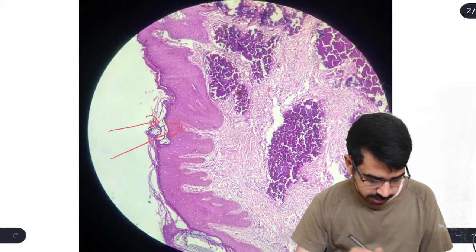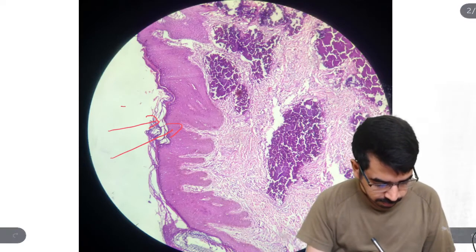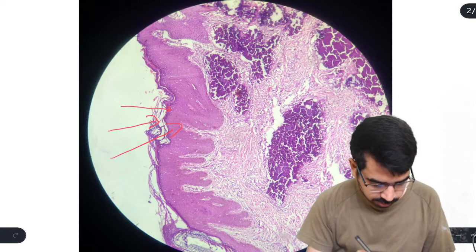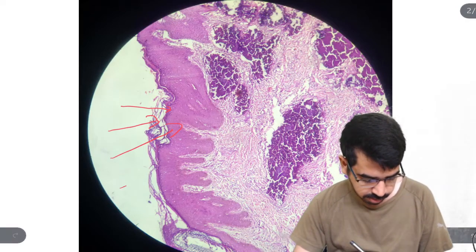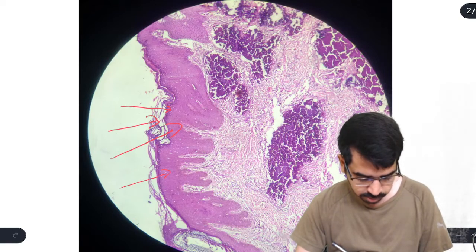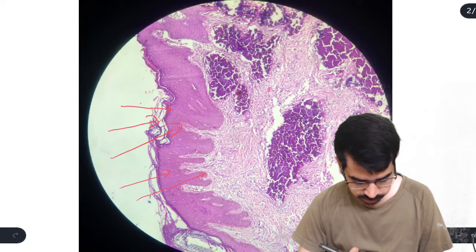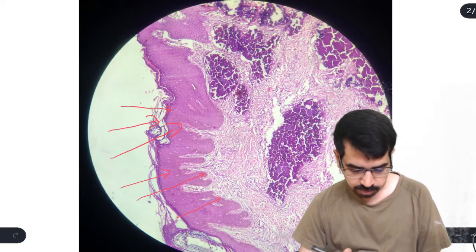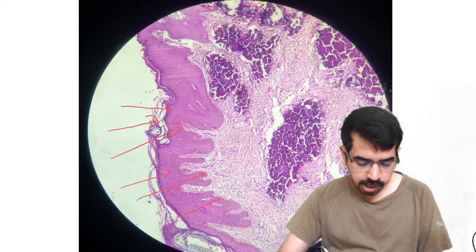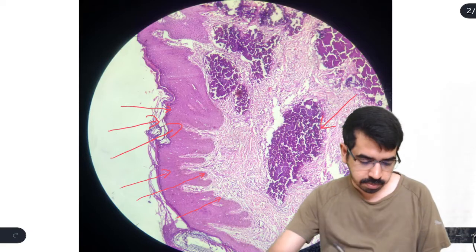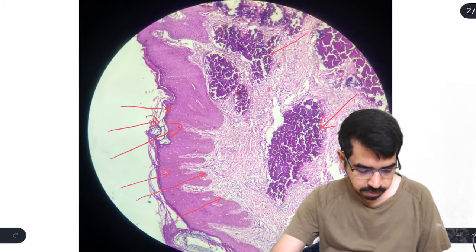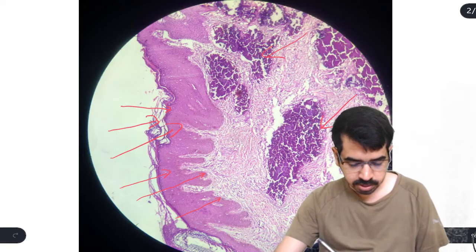Here we can see the stratum corneum layer, and here the stratum granulosum containing keratohyalin granules, and stratum spinosum, and finally the basal layer of cells — stratum basalis. The dermis shows these basophilic deposits, these deposits of basophilic material in the dermis.